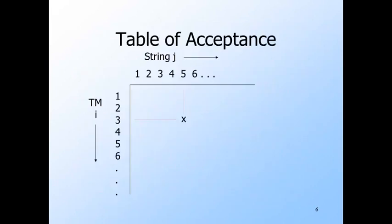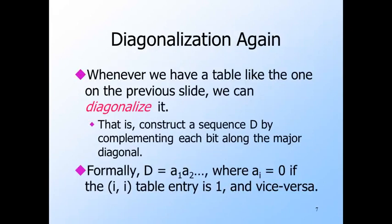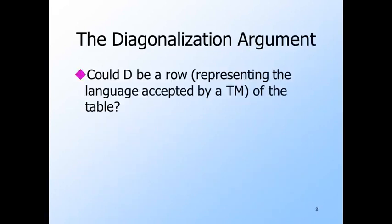Here is a table relating Turing machines to the strings they accept. The value in row i and column j is 1 if the i-th Turing machine accepts the j-th string and 0 if it does not. Notice that if the i-th Turing machine is one of the flawed ones, then its row is all zeroes. Any matrix of zeroes and ones with rows and columns corresponding to all the integers can be diagonalized over. That is, we can construct an infinite sequence of zeroes and ones, called D, such that the i-th bit of D is the complement of the bit in position ii along the diagonal. We can argue that D is not a row of the matrix and therefore does not represent the language accepted by any Turing machine.